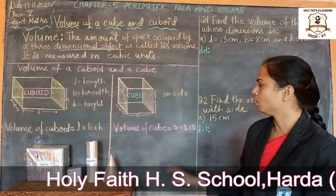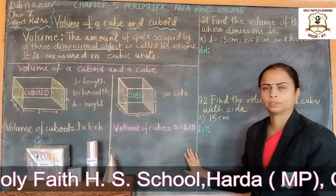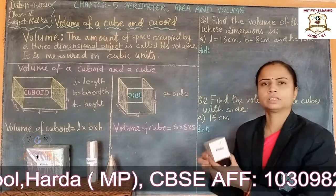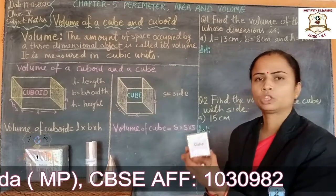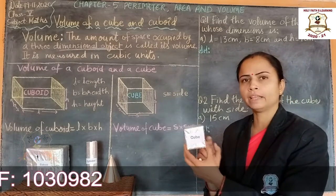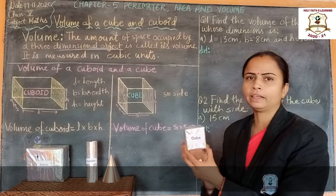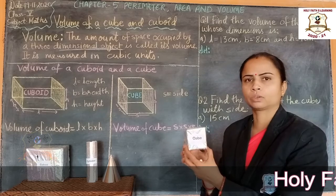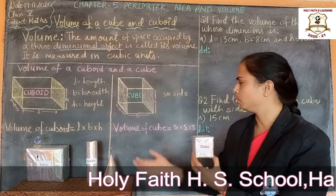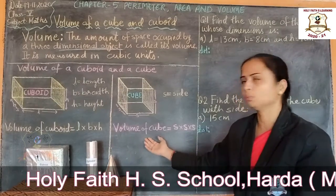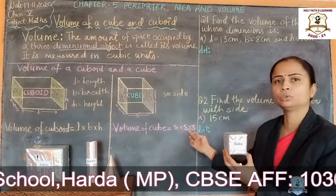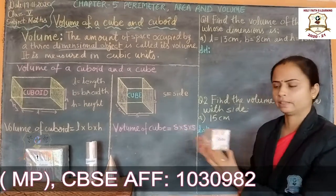Now, cube. This is a cube. A cube is a solid object whose length, breadth, and height are equal. The formula for the volume of a cube is: Volume = side × side × side.